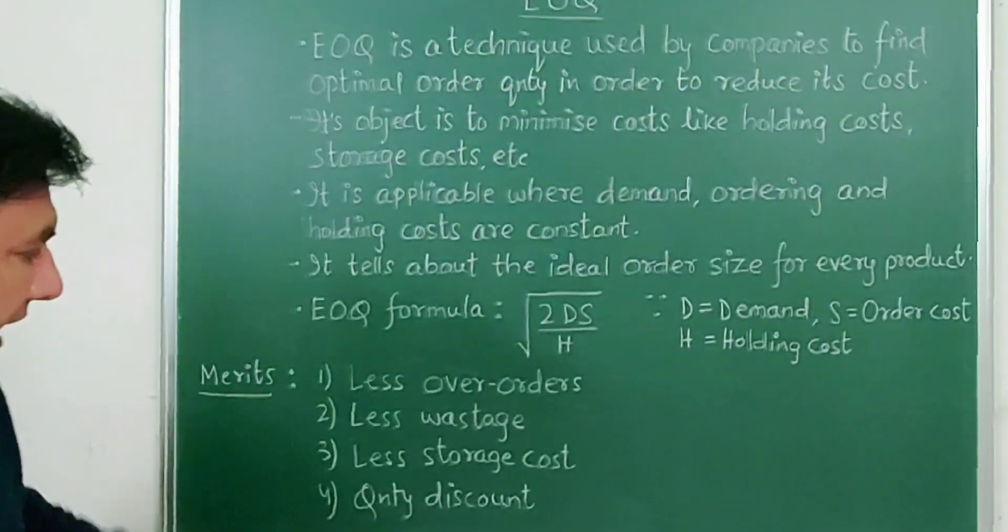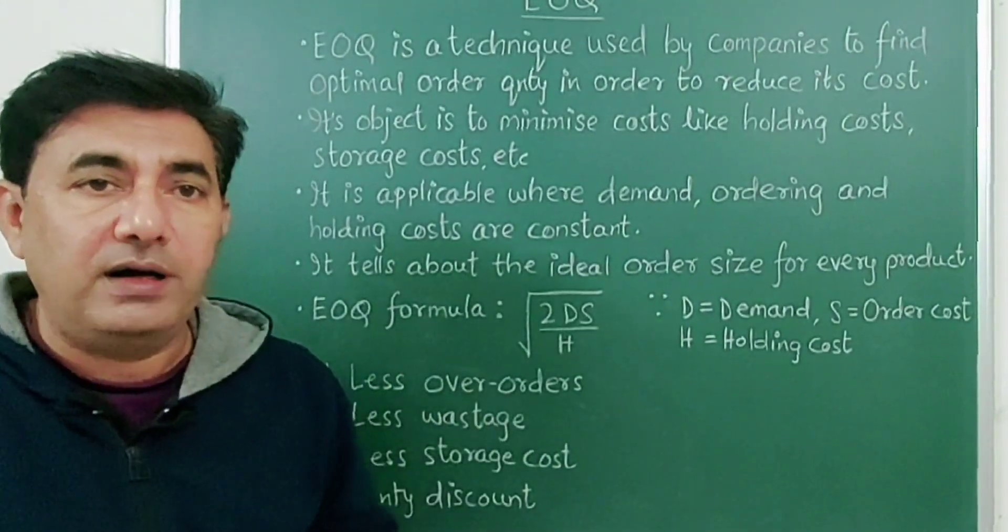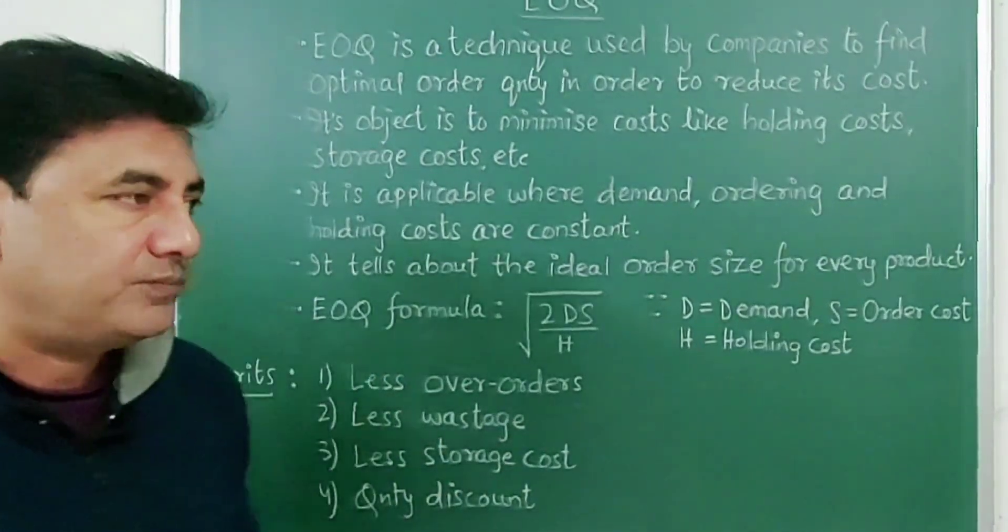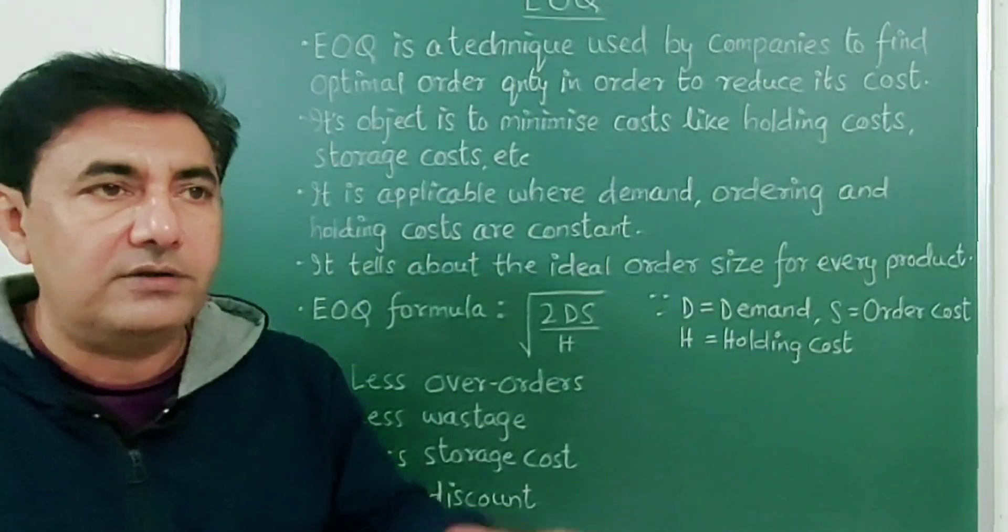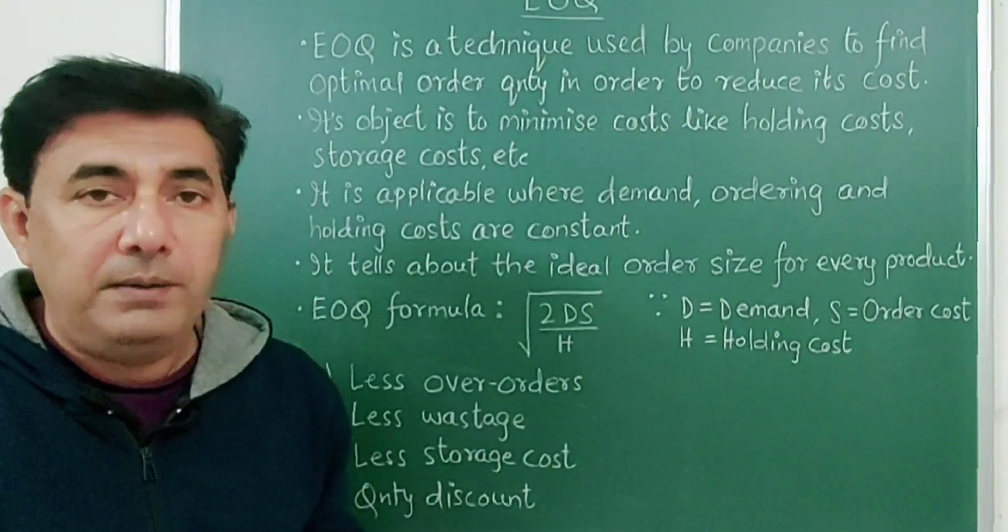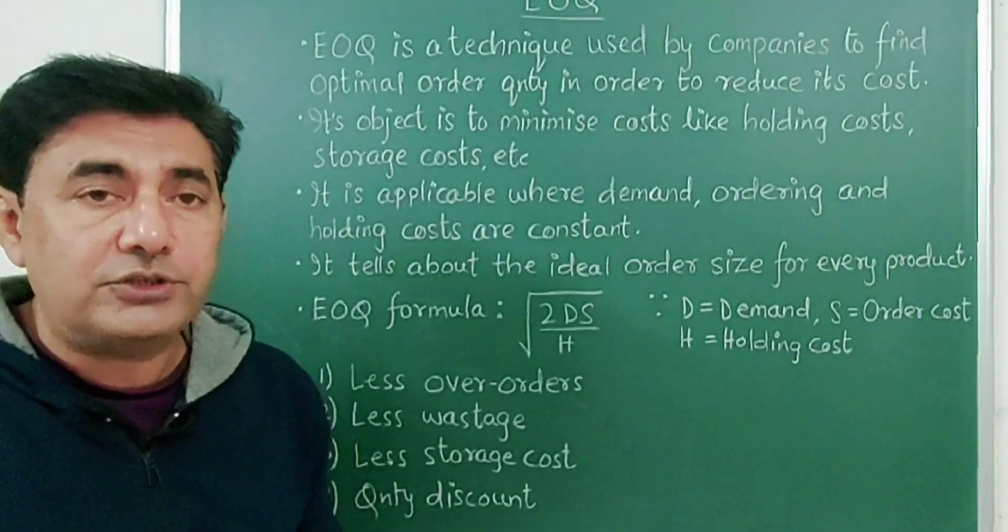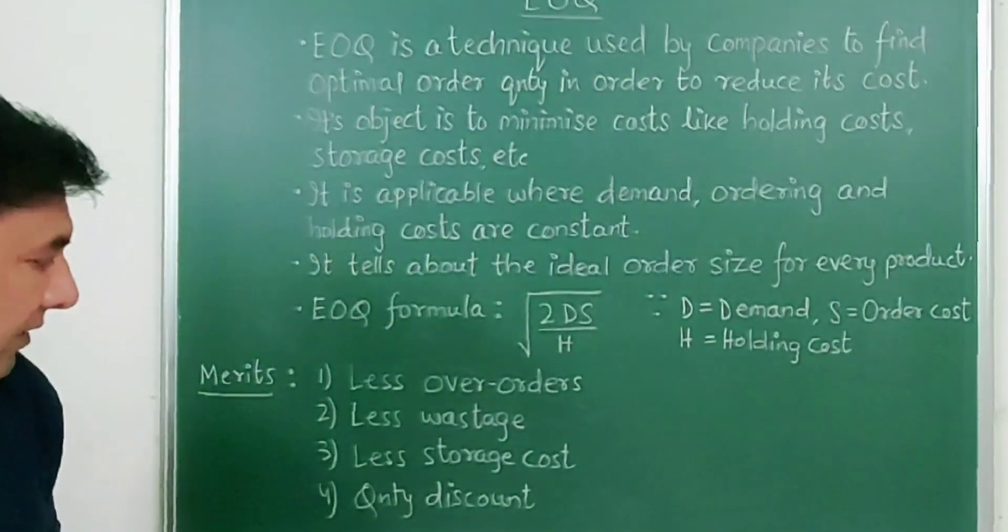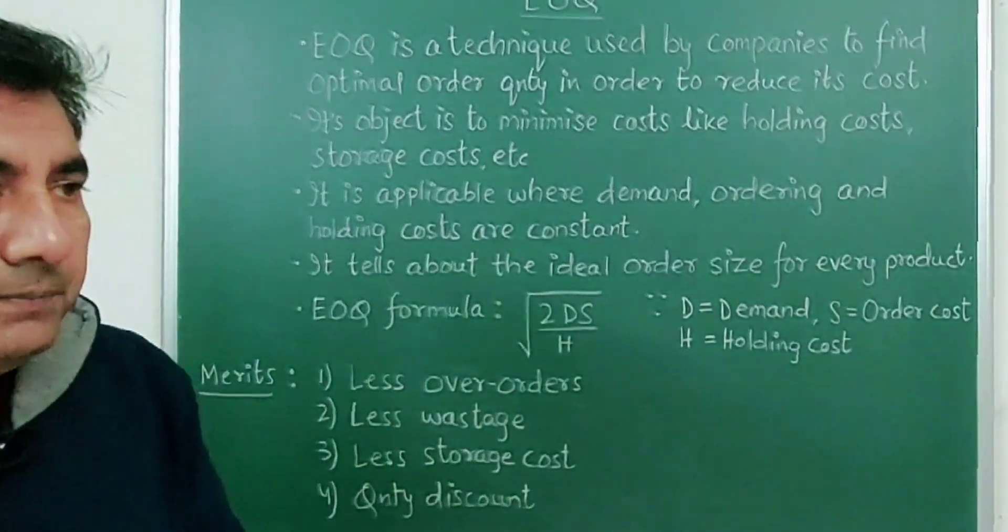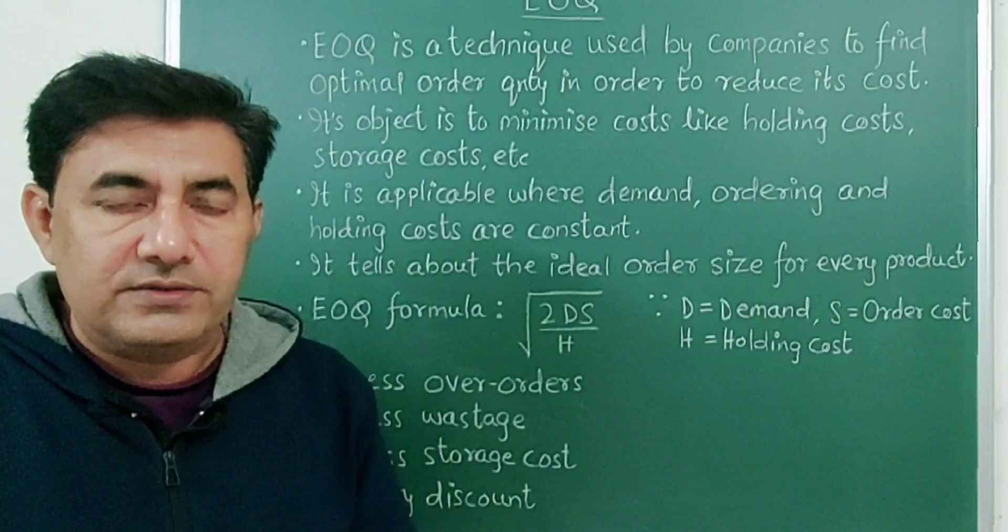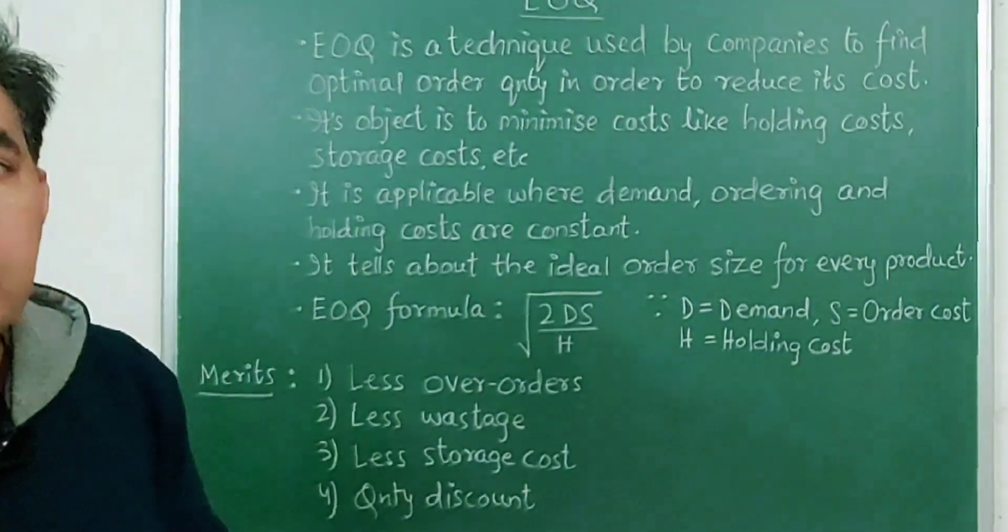Then, what are the advantages of this technique? I have written here four. First, less over orders. Over orders means ordering too much stock at once, that's also not good because it will increase the cost of the company. So this technique is very helpful in reducing the overstock. Then, less wastage. When we keep our stocks in the godowns or warehouses, there is every possible chance that stock can be lost by theft or by spoilage. There are many such reasons for stock loss, so this minimizes that. Third, less storage cost, this is understood. And fourth, quantity discount. Now when a company purchases raw materials in bulk quantities, so it can avail certain attractive discounts. So this technique can be used effectively and it's very popular.